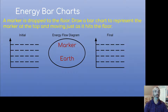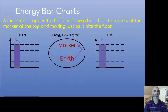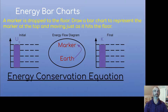Now let's ask the three questions. Is anything moving? No. Is there a spring? No. Is there anything that has a height greater than zero? Yes — the marker. So we have gravitational potential energy in the initial situation. Now the earth transfers the energy to the marker, giving it kinetic energy. So we ask the three questions again: kinetic energy — yes. There's no spring. There's no height at the final.